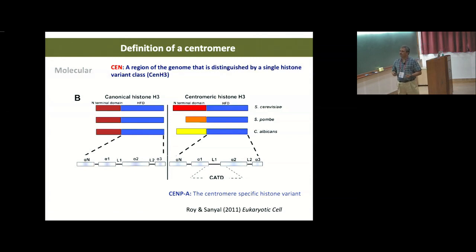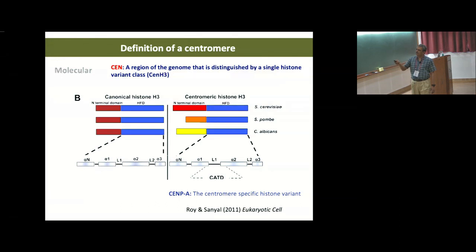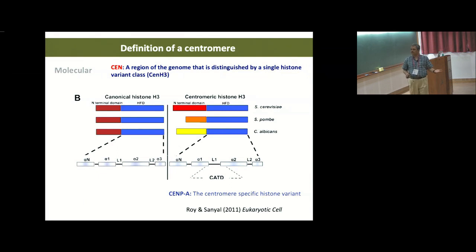It remains unclear what exactly the structure of the centromeric nucleosome is and how it constrains DNA. Histone H3 is a very conserved protein from yeast to humans—almost invariant—but centromeric histone H3 is the only histone that is rapidly evolving. The N-terminal sequences are very species-specific and different from each other.